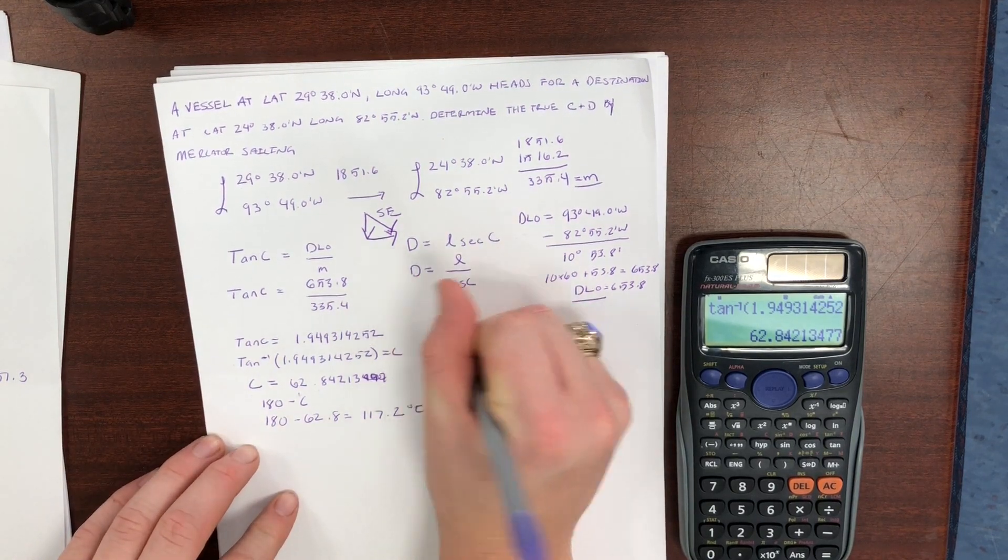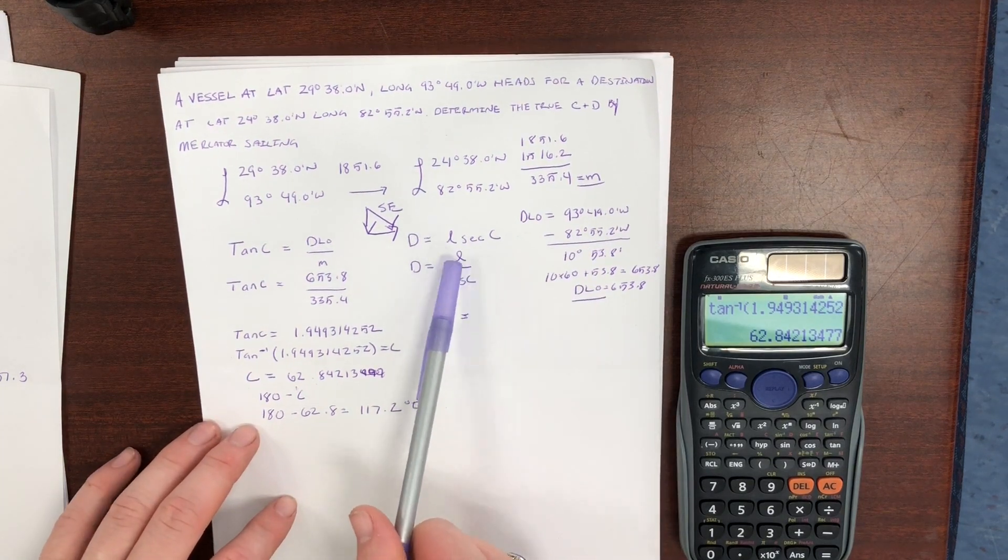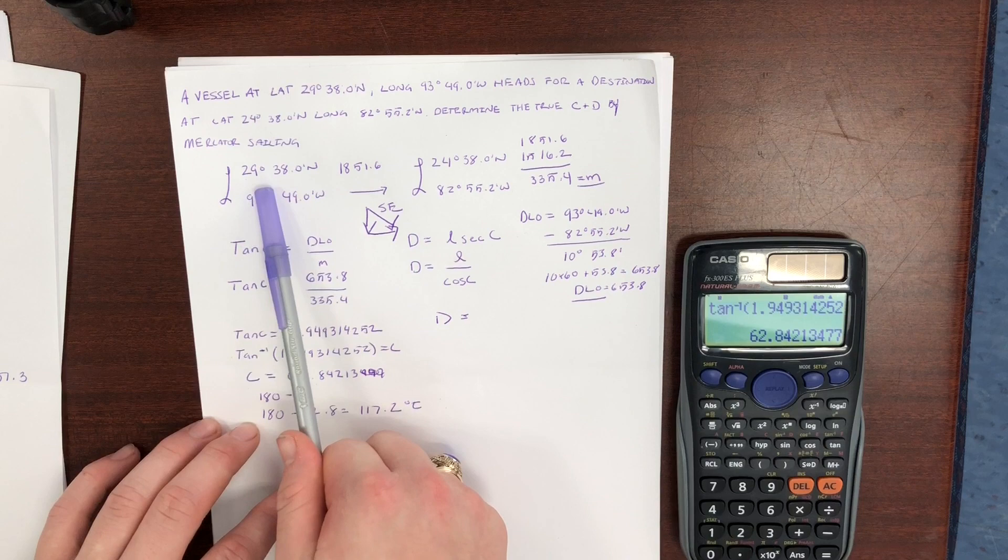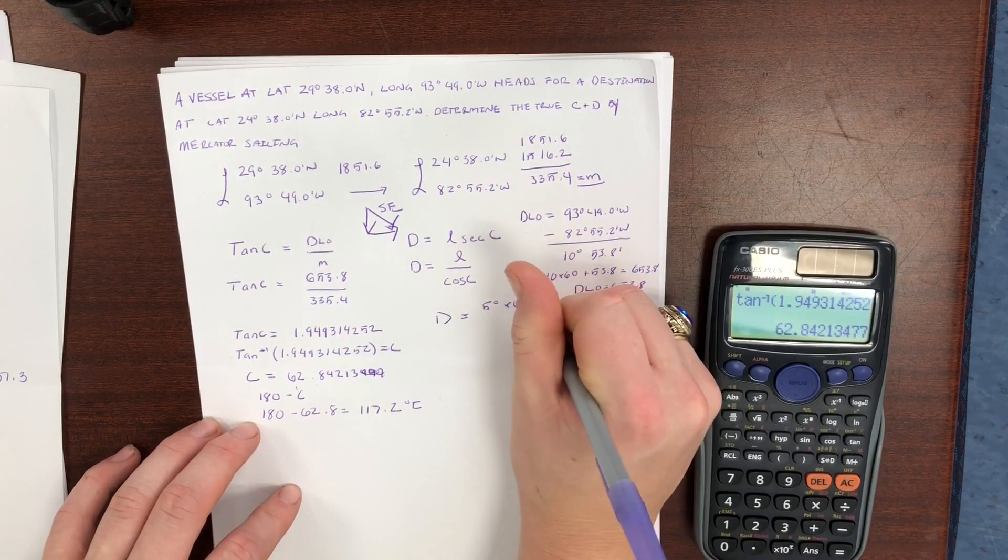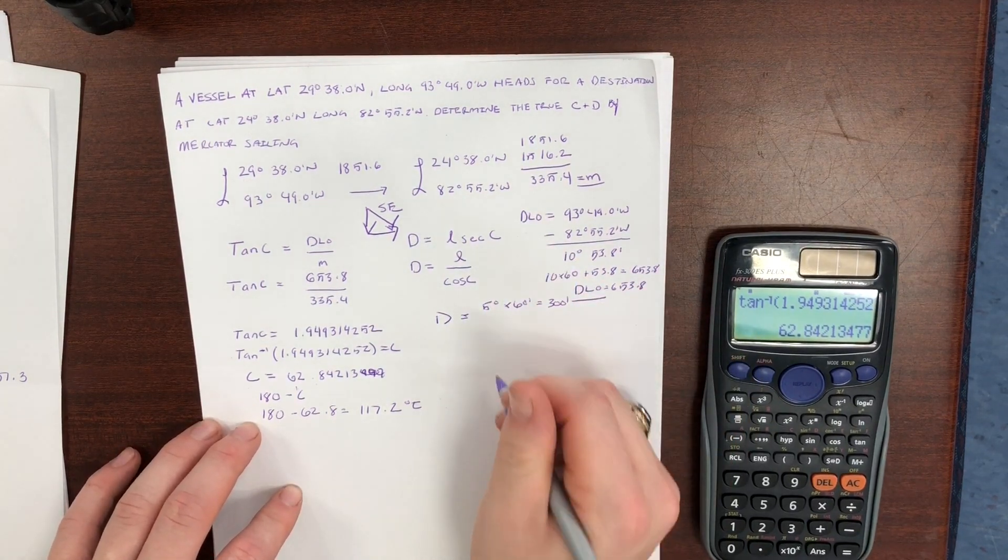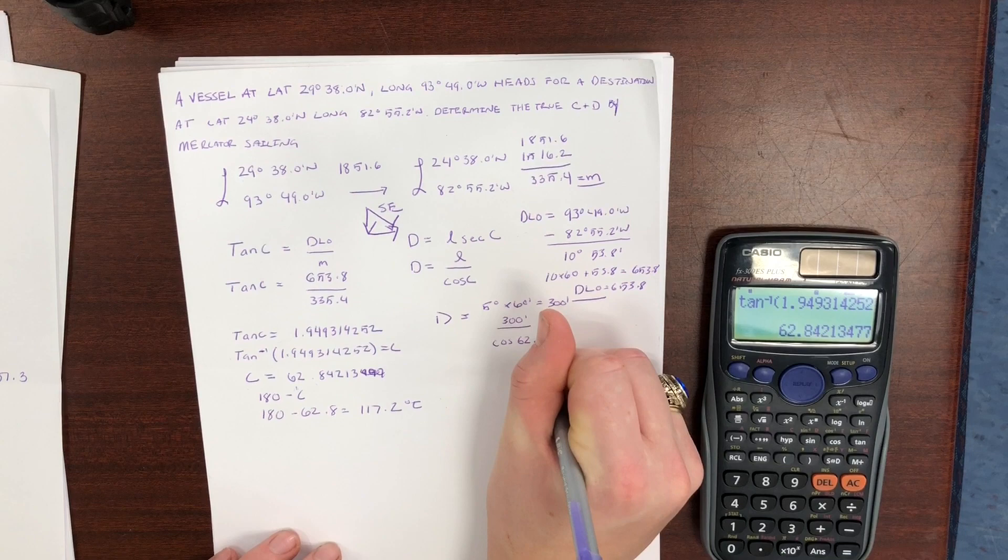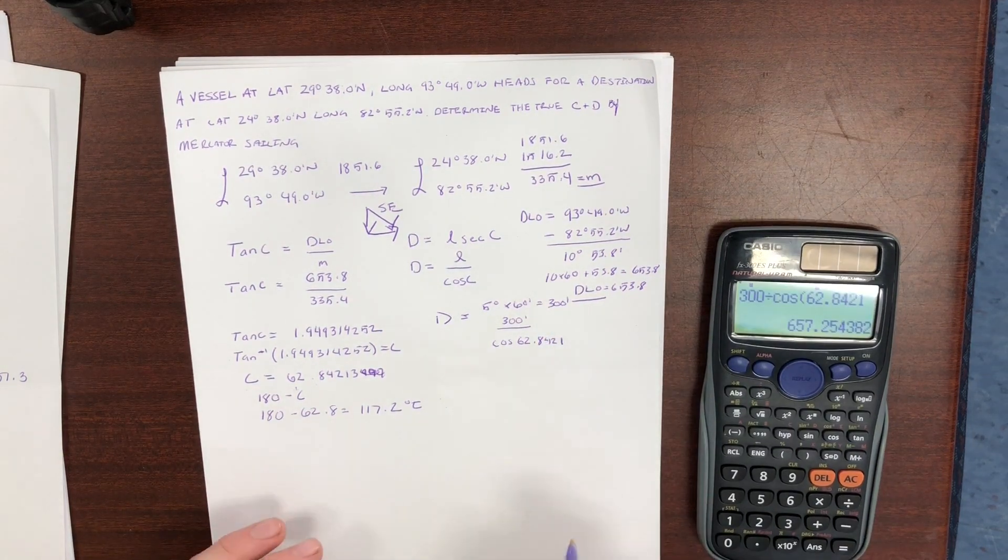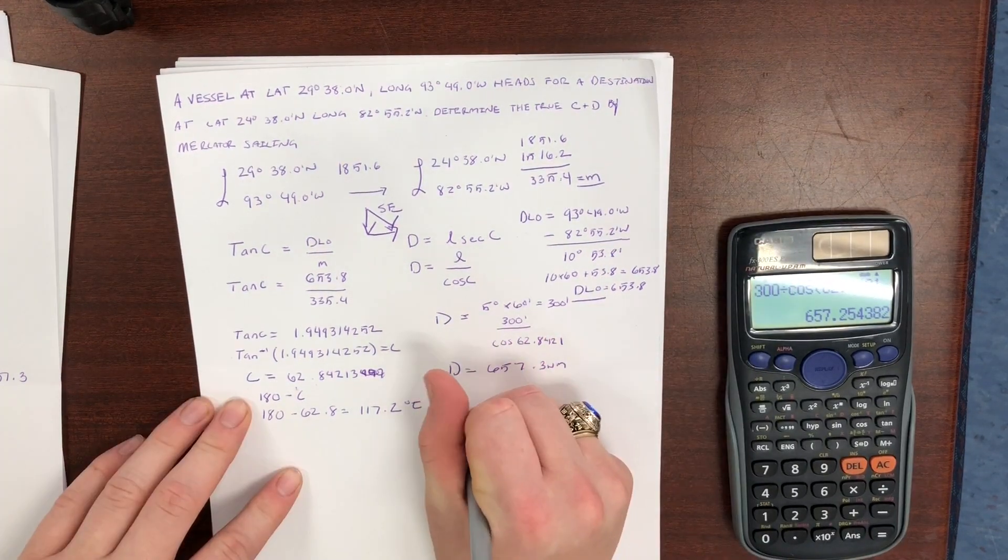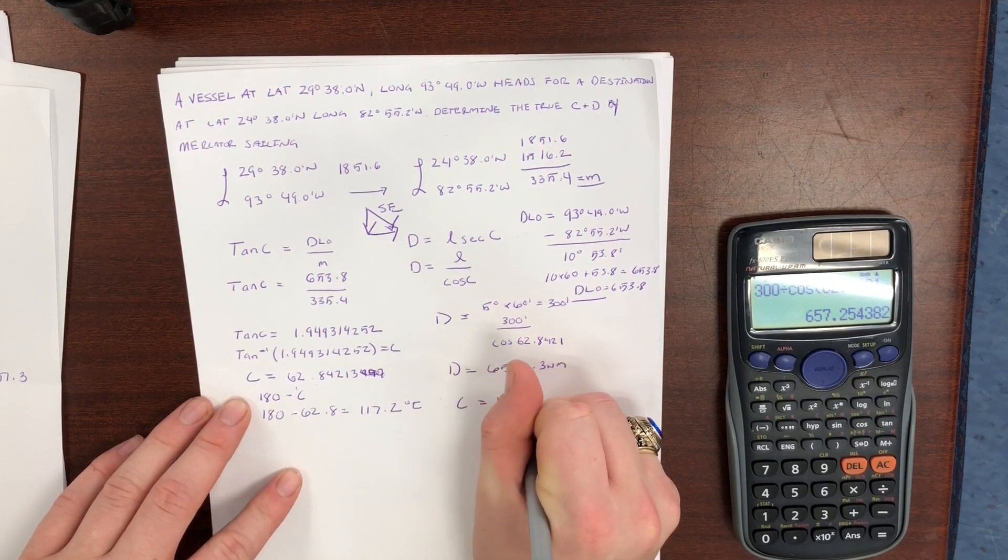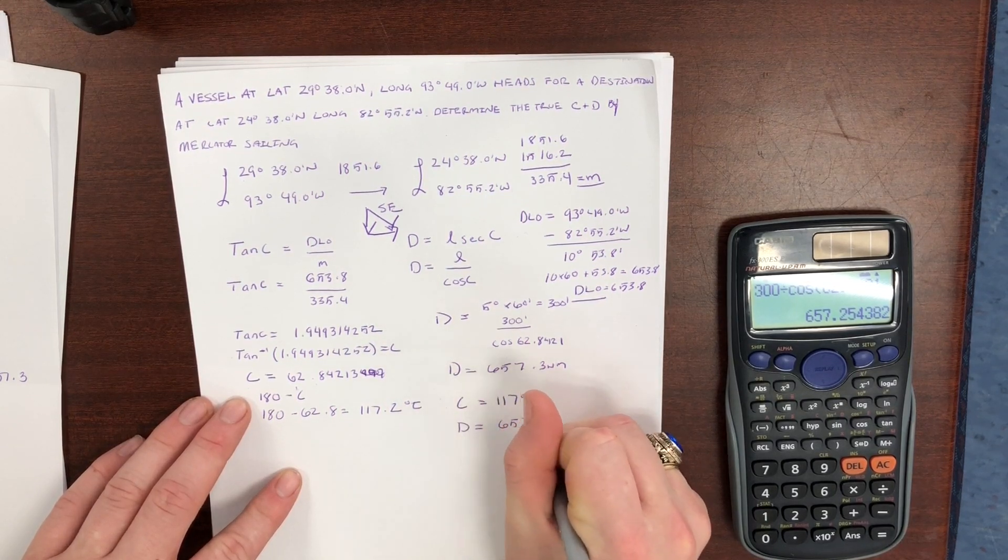The next thing we find is the distance. So D is equal to L, and that is the difference of latitude. So the difference of latitude, 2938 minus 2538, is 5 degrees times 60 minutes, and that would be 300 minutes. So 300 minutes divided by cos C, 62.8421, we get a distance of 657.3 nautical miles. So our course is 117 degrees true, and our distance is 657.3 nautical miles.